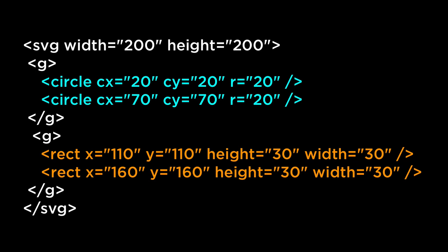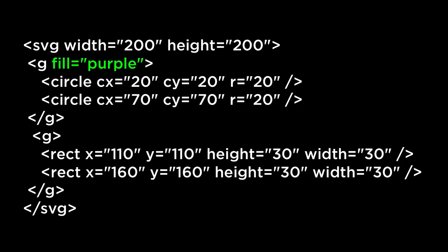Any transformation applied to the SVG group element is applied to all of the child elements contained inside. One way to organize a visualization is by grouping elements together that have the same attributes — for example, circle SVG elements grouped together and rectangle SVG elements grouped together. Once elements are grouped together, you can apply attributes and values to the G element, which filter down to all contained elements. For instance, both SVG circle elements will have a fill of purple.